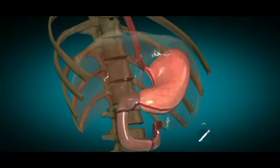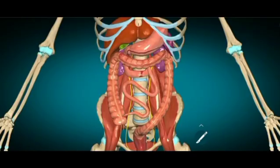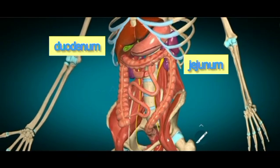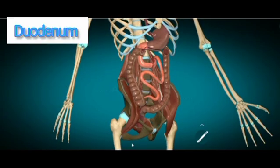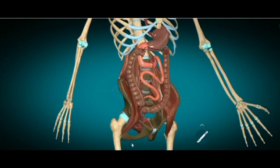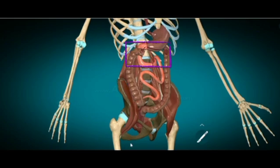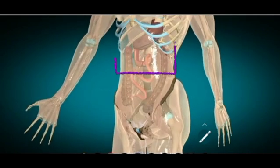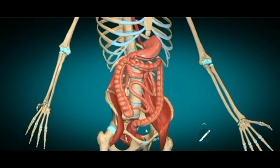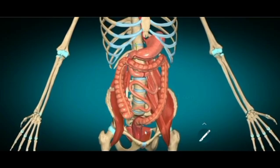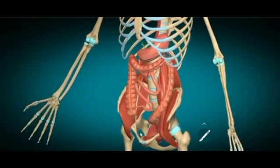Let's talk about the duodenum first. It's a part of the small intestine that is deeply placed on the posterior abdominal wall. It's a C-shaped tube situated in the epigastric and umbilical regions. The duodenum is the first part of the small intestine, extending from the stomach and joining the second part of the small intestine we call the jejunum.